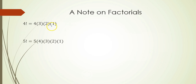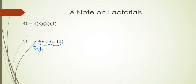5 factorial would be 5 times 4 times 3 times 2 times 1. One way we can write this differently is to write the 5 separately by itself. Notice the remaining product — 4 times 3 times 2 times 1 — is actually 4 factorial. So we can write 5 factorial as 5 times 4 factorial; we can break off that first factor and write it separately.